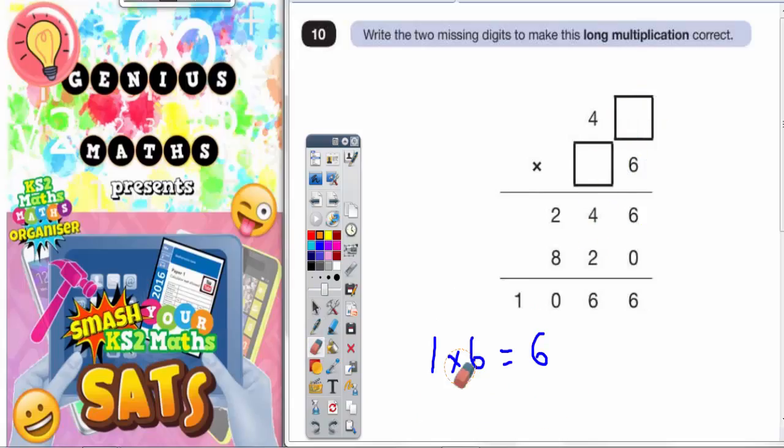The only other option left is it must be 1 times 6. So let's try that. So we put a 1 in there. 6 times 1 gives you 6 and 6 times 4 gives you 24. So that 1 definitely works.